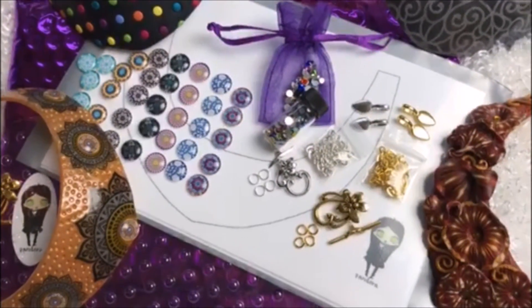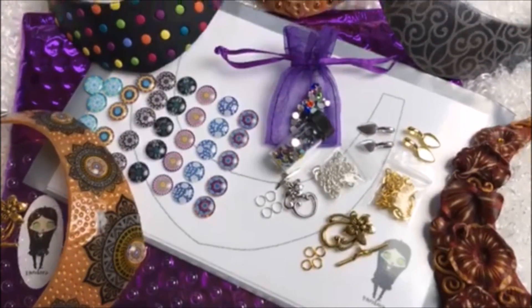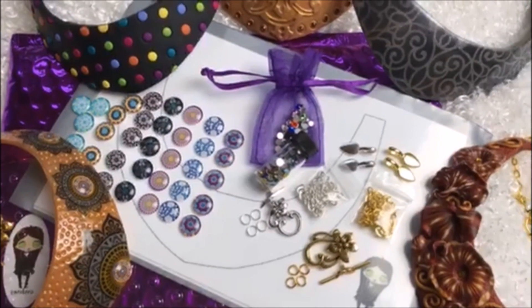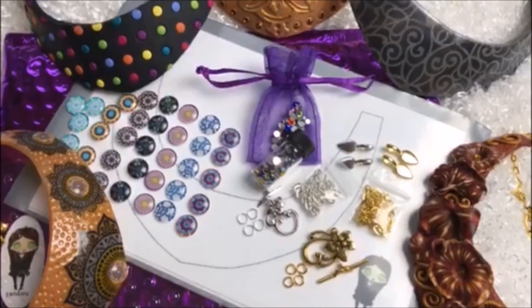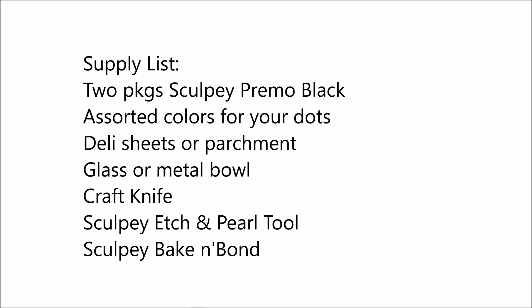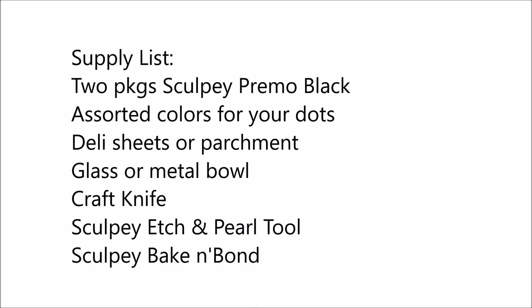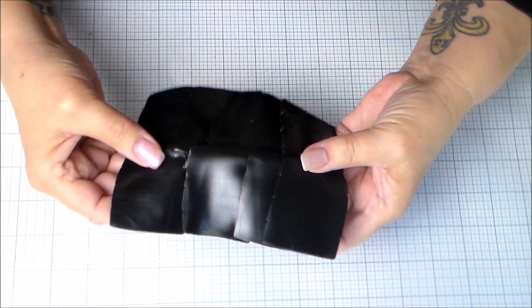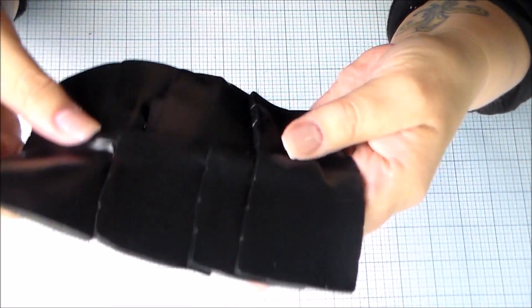You're also going to want to pick up a few supplies at your craft store. The etch and pearl tool is essential to this process. I tried it a lot of different ways. So look into that. There's more information down in the description box. It kind of tells you about that. So I'm starting with two packs of Primo Black.